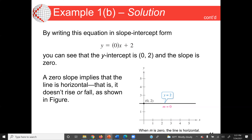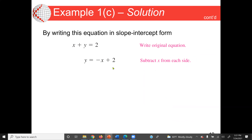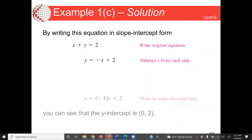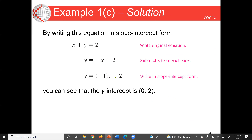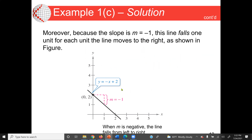For x plus y equal to 2, we write it in slope-intercept form: y gives us negative x plus 2, or y equals negative 1 times x plus 2. Our slope is negative 1 and our y-intercept is 2. Because the slope is negative 1, the line falls one unit for each unit the line moves to the right — from 2 to 1 when moving from x=0 to x=1. This is a negative slope: when x increases, y decreases, or when x decreases, y increases.